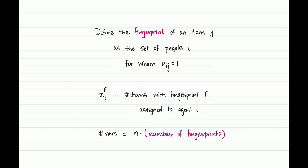This translates into the ILP formulation as follows. We introduce variables x_{i,f}, denoting the number of items with fingerprint f assigned to agent i. The number of variables is now n times the number of fingerprints. Notice that the values these variables take are no longer 0 or 1 as before — they can be as large as m, the total number of items.